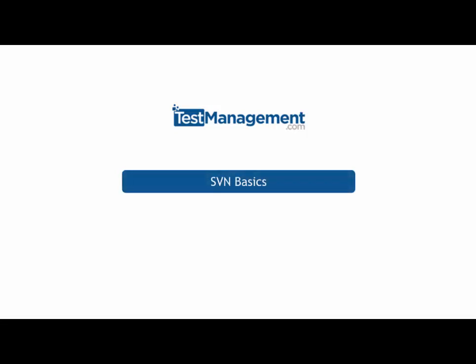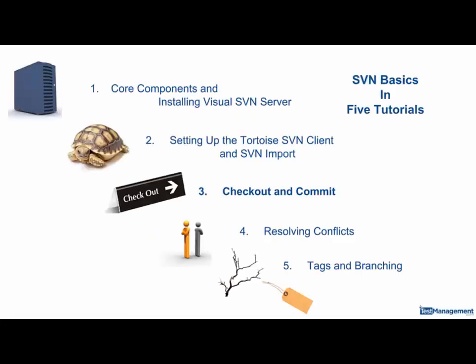We're into the third tutorial on SVN Basics and we're looking at the process of checking out our files from the SVN server. We've already covered the core components and the installation of the SVN server. We've set up our Tortoise SVN client and the key now is using that client to check out a copy of those files from the SVN server onto our local client machine.